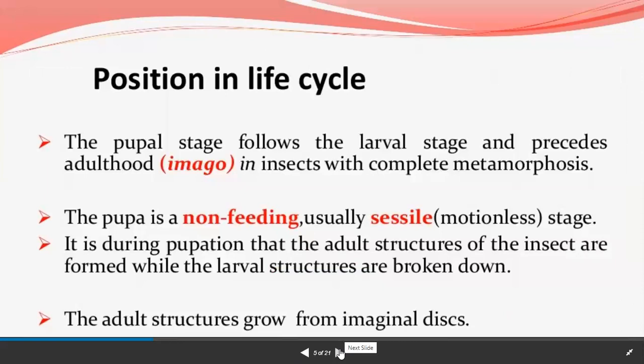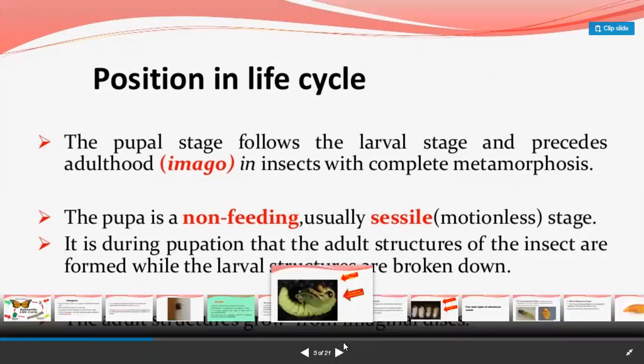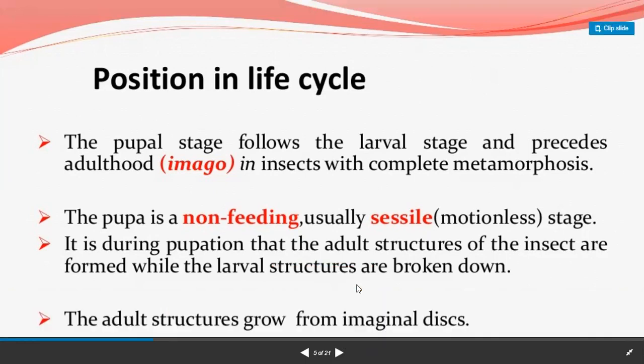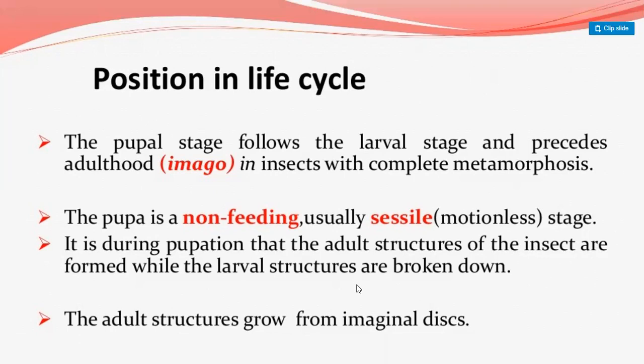The pupal stage follows the larval stage and precedes adulthood. In insects with complete metamorphosis, the pupa is a non-feeding, usually sessile — meaning motionless — stage. It is during pupation that the adult structures of the insect are formed, while the larval structures are broken down. After the larval structure, the pupal structure is formed.